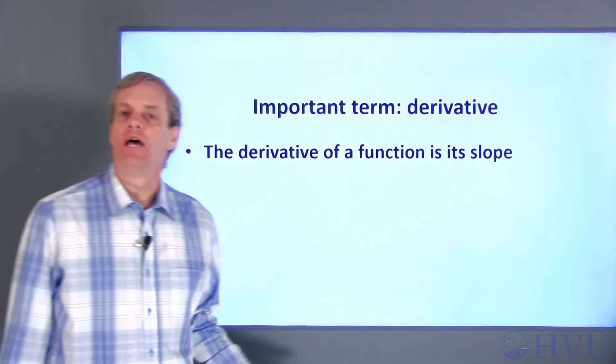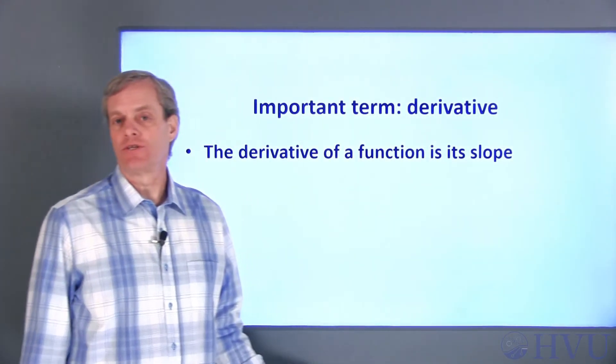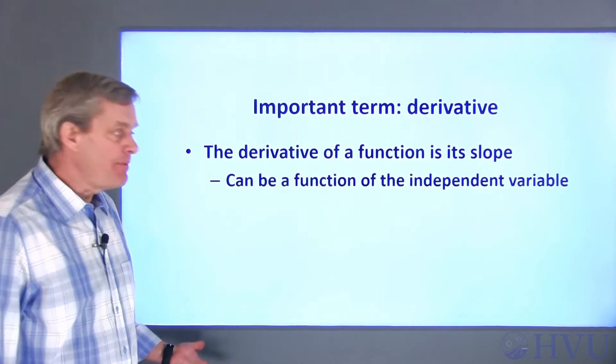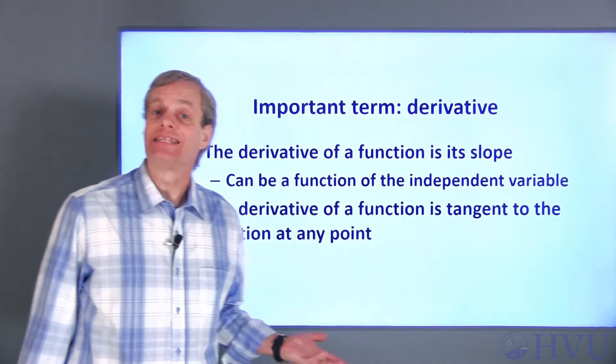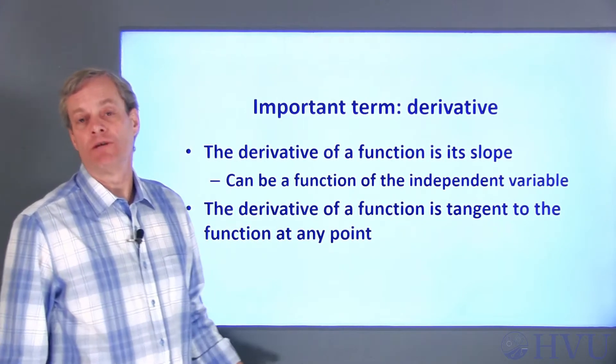The slope of a line is also called the derivative of the function describing the line. It's typically a function of the independent variable and is tangent to the function at the point where it's evaluated.